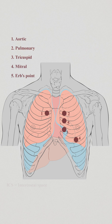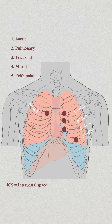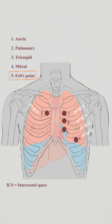The first heart sound, S1, is most prominent in the mitral and tricuspid areas, whereas S2 is more notable in the aortic and pulmonic regions. Erb's point is the approximate center of the heart. It is useful for a quick and general assessment of the heart, as all heart sounds are often audible here, both physiological and pathological.